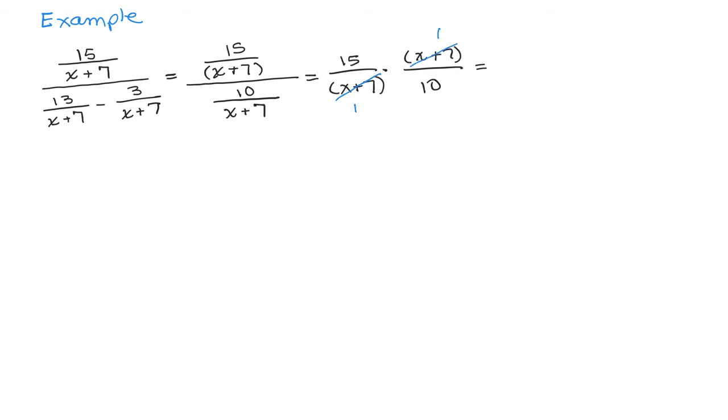OK, so I can go ahead and cancel the X plus 7. And let's see, what goes into both 15 and 10? 5 does. So 10 divided by 5 is 2, 15 divided by 5 is 3. So my final answer here is 3 times 1 will be my new numerator, and 1 times 2 is my new denominator. So this big nasty fraction just reduces to 3 halves.